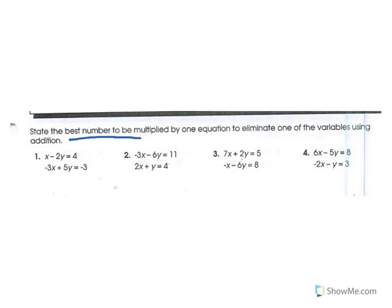So state the best number to be multiplied by. So for number 1, if you look at the x column and the y column, it would be easier to cancel out the x column because you would only have to multiply by 3. But if we multiply the x by 3 in order to cancel out the columns, we would also have to multiply everything in the equation by 3.